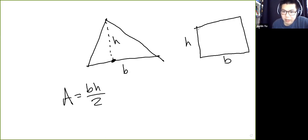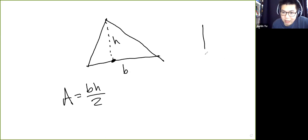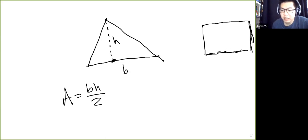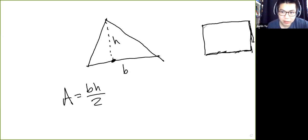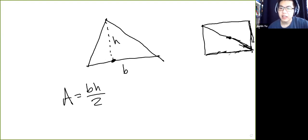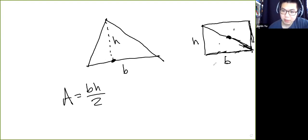Let's first prove this for right triangles. We can rotate this around the center. Let's call this base and this height. We see that these two triangles are exactly the same. So since the area of the entire rectangle is base times height, we get base times height over two, as desired.